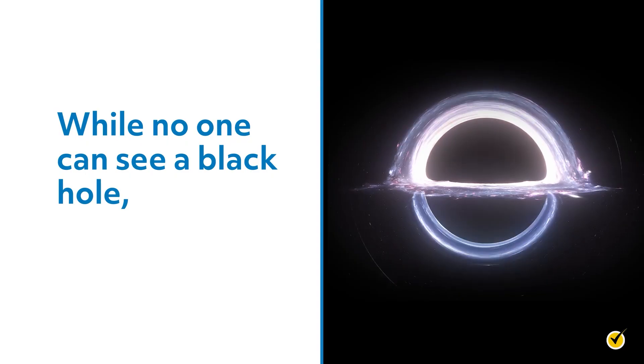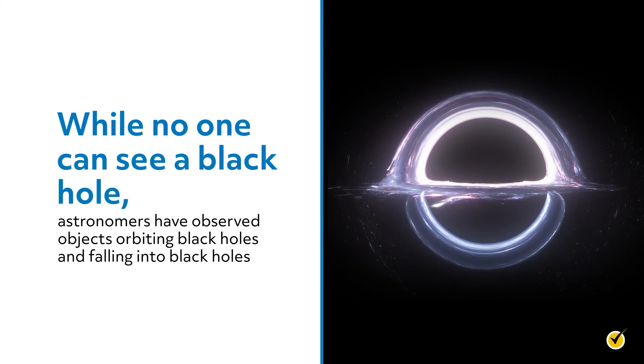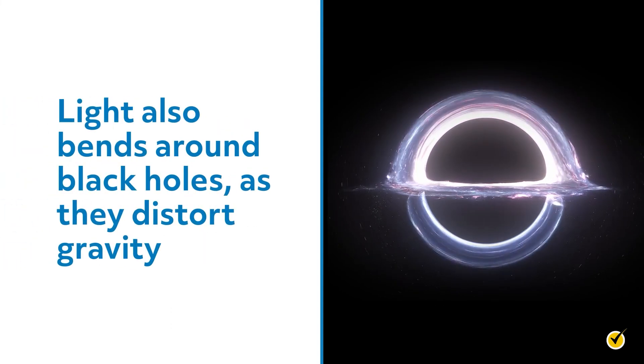While no one can see a black hole, astronomers have observed objects orbiting black holes and falling into black holes. Light also bends around black holes as they distort gravity.